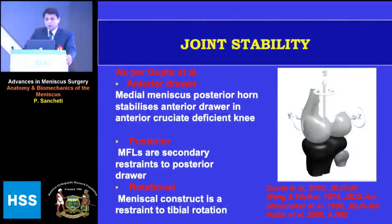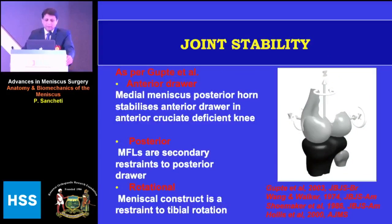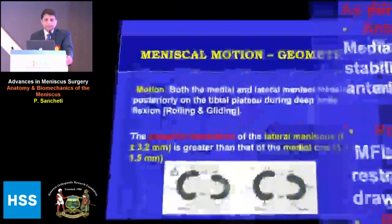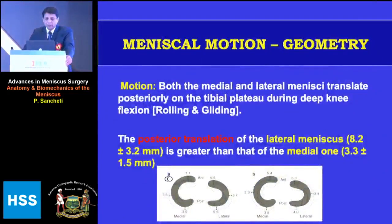The meniscus also provides stability. While primary stability comes from the anterior cruciate, posterior cruciate, and collateral ligaments, the posterior horn of the medial meniscus stabilizes the anterior drawer in an ACL-deficient knee, and the meniscofemoral ligaments are secondary restraints to the posterior drawer. The posterior translation of the lateral meniscus is greater than that of the medial, which is another reason lateral meniscus tears are less common.